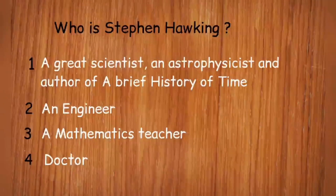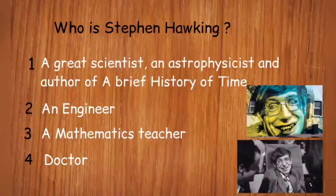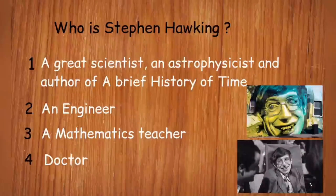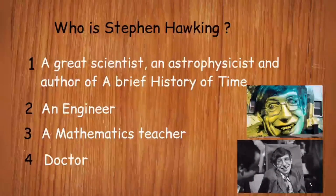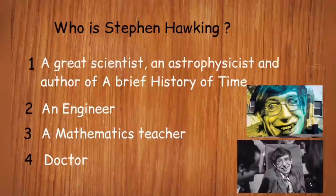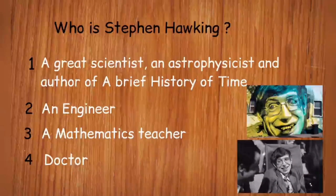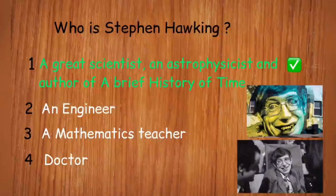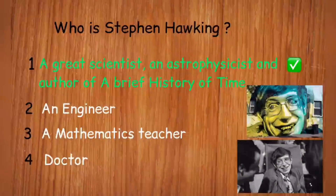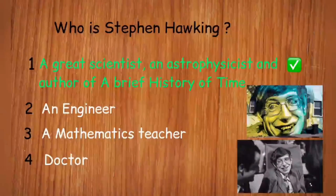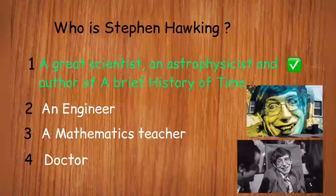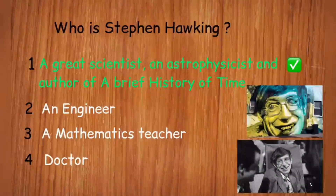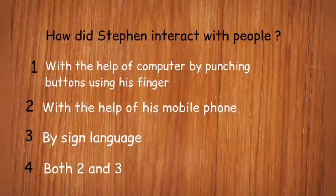Who is Stephen Hawking? The options are: a great scientist, an astrophysicist and author of 'A Brief History of Time'; an engineer; a mathematics teacher; or a doctor. Stephen Hawking was a great scientist, an astrophysicist, and also the author of one of the biggest best-selling books, 'A Brief History of Time'. Option one is the right answer.